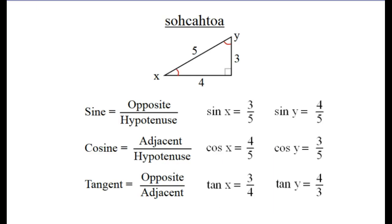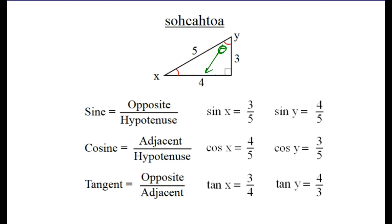If I have a triangle and we talk about the relationships of the sides — the opposite side of theta, if theta is down here, is 3. However, if you place theta up here and you're trying to find angle Y, then the opposite would be 4. So depending on what angle you're trying to find, the opposite could change. The hypotenuse never changes — it's always the side opposite the right angle, or the longest side.